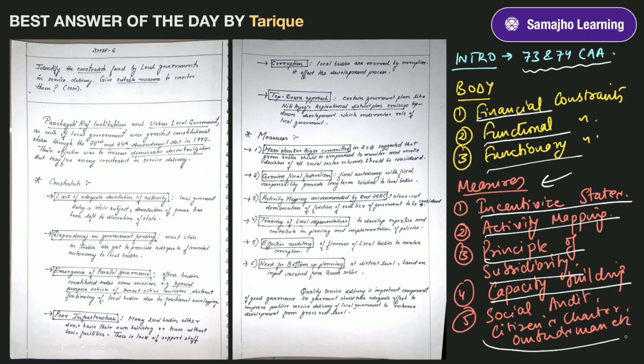If you write so many points then your answer will be complete. The bulk should be in constraints - you can list many constraints, but measures you don't need too many, 5-6-7 solid points. You can also mention that there should be a bottom-up approach in planning instead of the top-down approach.